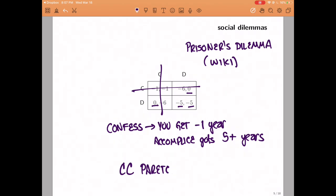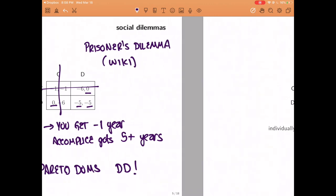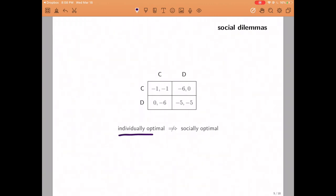However, if they both defect, they end up going to prison much longer than if both of them were to remain silent. In other words, cooperate cooperate, Pareto dominates defect defect. This is a situation where the behavior that is individually optimal leads to outcomes that are socially undesirable.